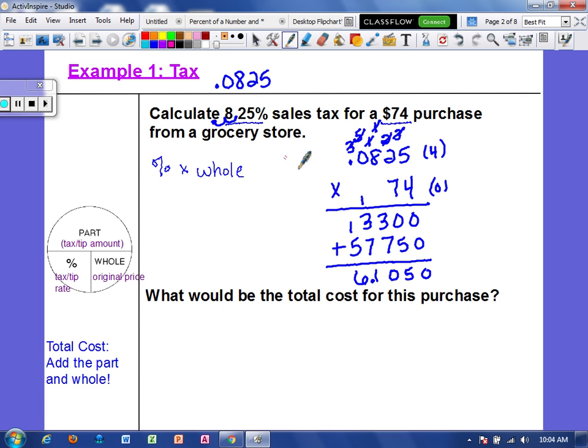Now, since we're dealing with money, we want to round to the hundredths place. That would be this place. Since there is a 5 on the right, we're going to bump the 0 up to a 1. So tax would be $6.11.